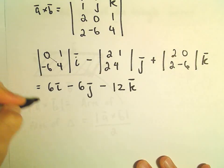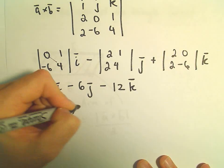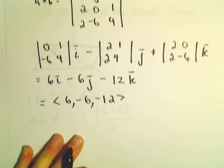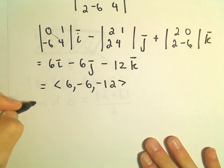So it says the cross product has components 6, negative 6, negative 12. And now we'll just find the magnitude of this.